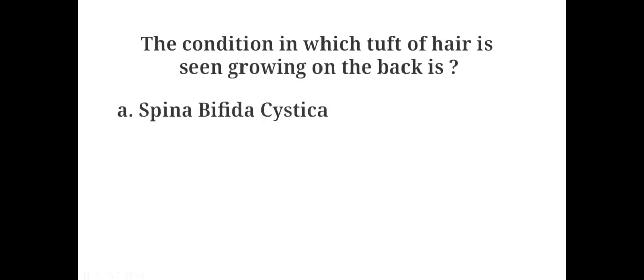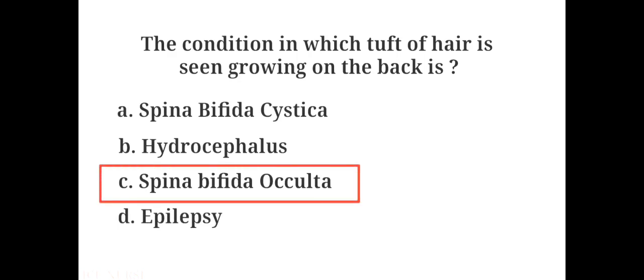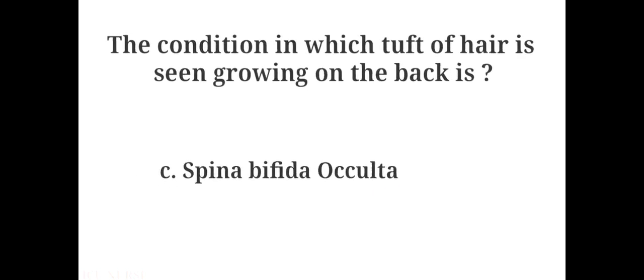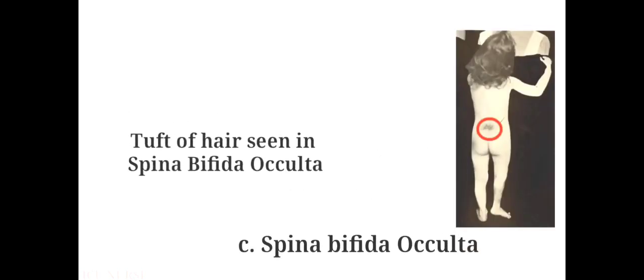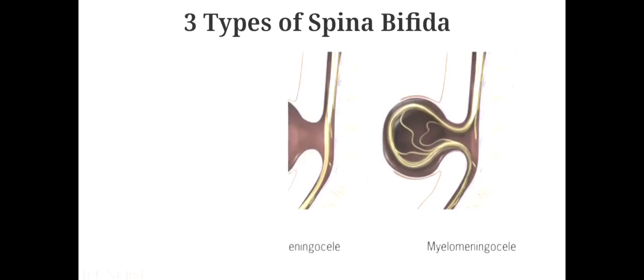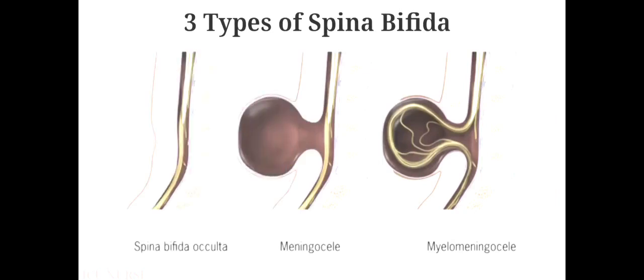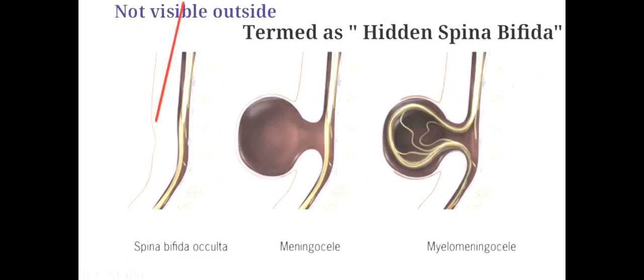The condition in which a tuft of hair is seen growing on the back is: A. Spina bifida cystica, B. Hydrocephalus, C. Spina bifida occulta, D. Epilepsy. The answer is C. Spina bifida occulta. There are three types of spina bifida: Myelomeningocele, Meningocele, and Spina bifida occulta. Spina bifida occulta is the mildest form and can be termed as hidden spina bifida, as it is covered by skin.